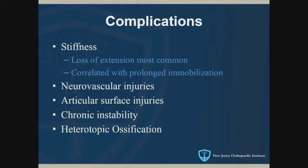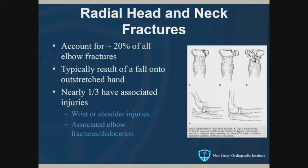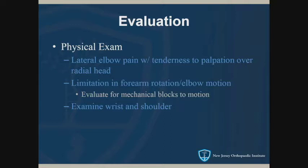Next, radial head and neck fractures — also very common, representing 20% of all elbow fractures. Typically it's a fall on an outstretched hand. One third of them will have an additional wrist, shoulder, or associated elbow fracture, so you have to be focused on not just one part of the elbow. On exam, it's pretty pathognomonic: tenderness on the outside of the elbow. Have them pronate and supinate the forearm — that will hurt, and they'll be point tender over the radial head. If they can't move the elbow or can't pronate/supinate, that's concerning for something surgical and you would want to refer.